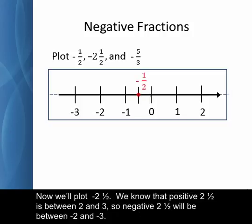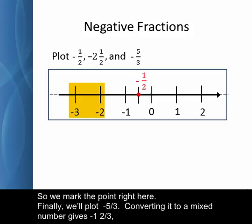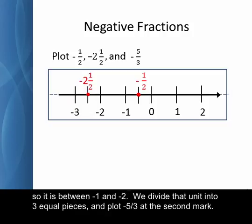Now we'll plot negative two and a half. We know that positive two and a half is between two and three, so negative two and a half will be between negative two and negative three. So we mark the point right here. Finally, we'll plot negative five-thirds. Converting it to a mixed number gives negative one and two-thirds, so it's between negative one and negative two. We divide that unit into three equal pieces and plot negative five-thirds at the second mark.